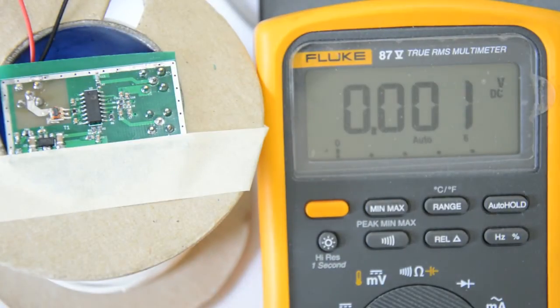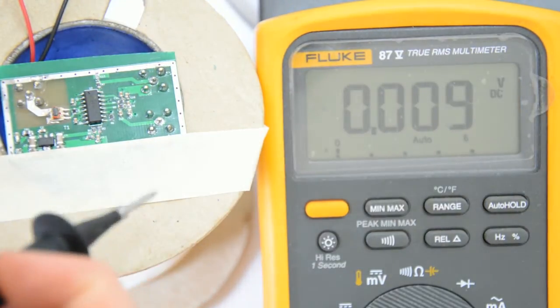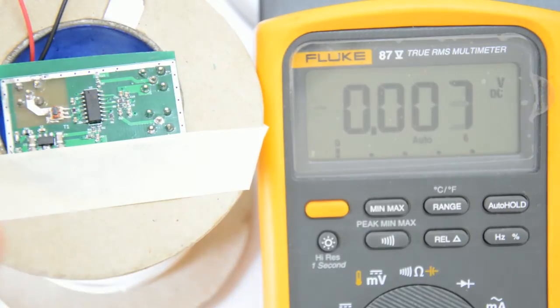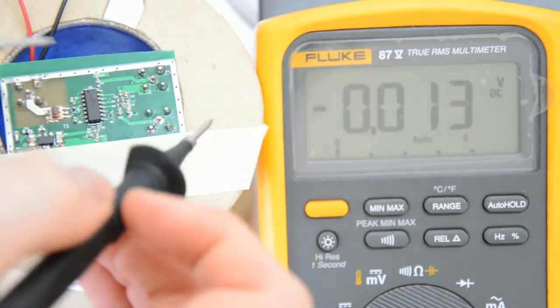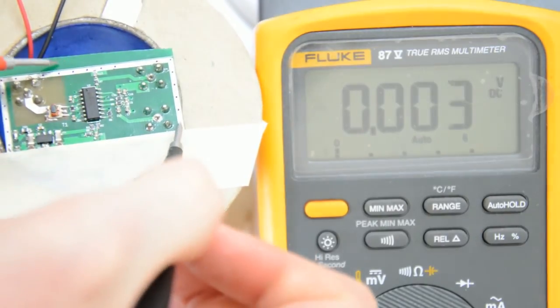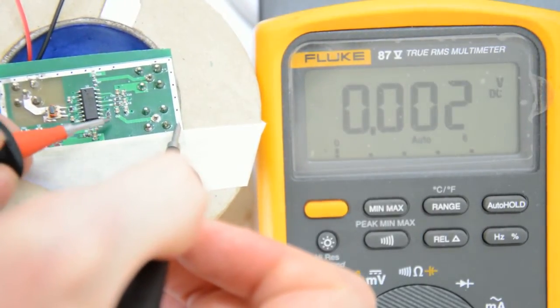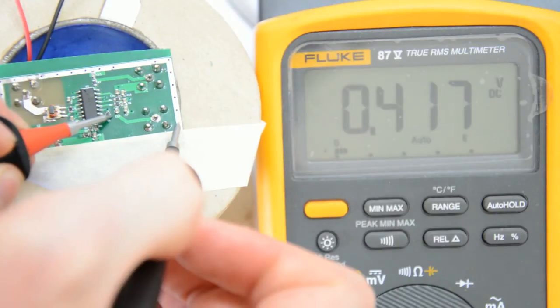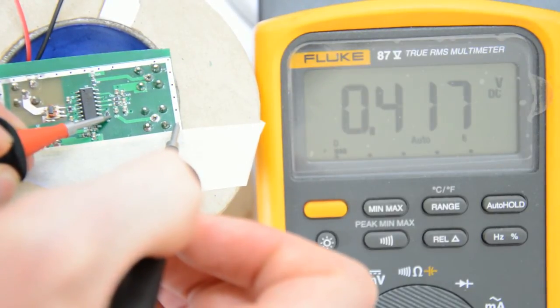Next I will probe some voltages that are relevant to the limiter functionality of the chip only. The first one is pin number 9 which should be about 400 millivolts absolute. So let's have a look. Pin number 9. And that's 417 millivolts. So that's good enough.